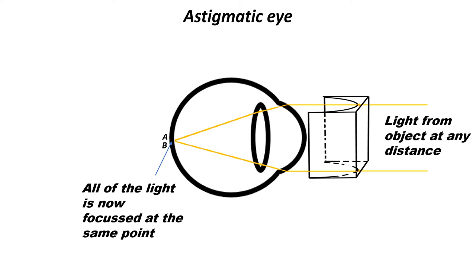Now, astigmatism rarely happens on its own. Most of the time it occurs together with either long sight or short sight, in which case the glasses will incorporate both the astigmatism correction and the long or short sight correction.